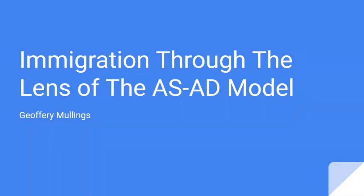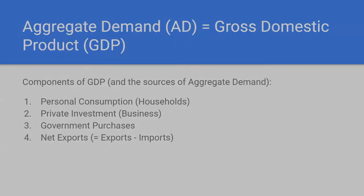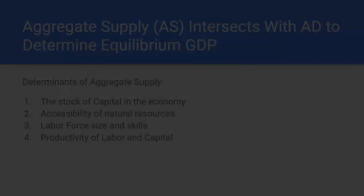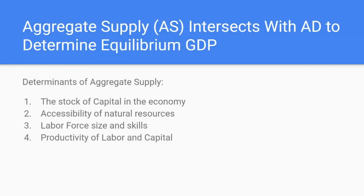Hey everybody, we're going to talk today about immigration in the United States through the lens of the aggregate supply and aggregate demand model. First, just some housekeeping to ensure that we're on the same page about what aggregate demand is: it effectively equals the components of GDP — gross domestic product — so that's personal consumption, which pertains to households, and private investment, which pertains to businesses, government purchases, and net exports, which are exports minus imports.